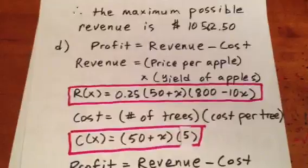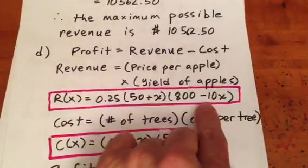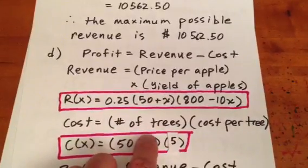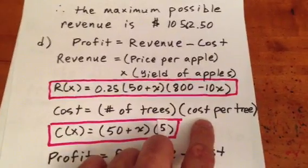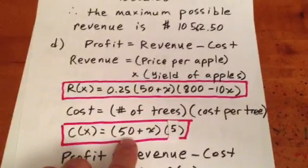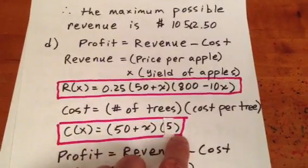So we see that her revenue is what we said it was in part C, but the cost is going to be the number of trees times the cost to her of maintaining each tree. In other words, the cost is going to be 50 plus X times 5.